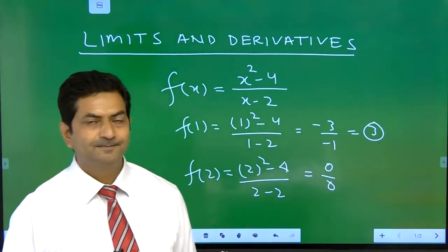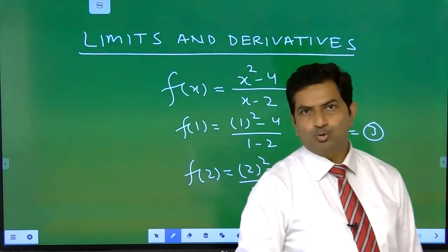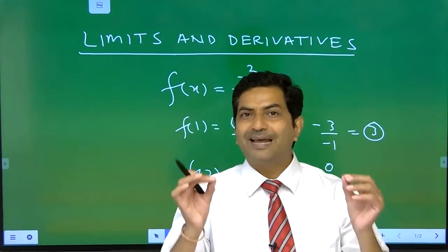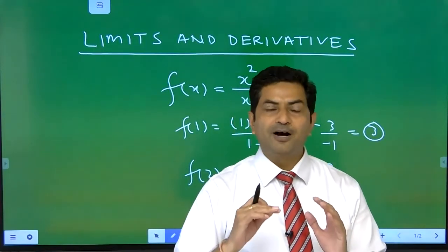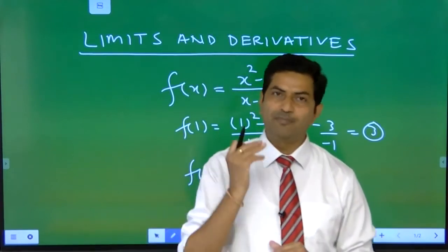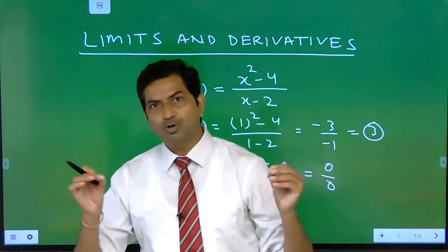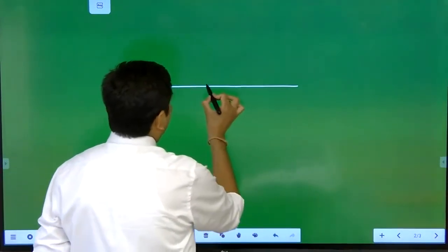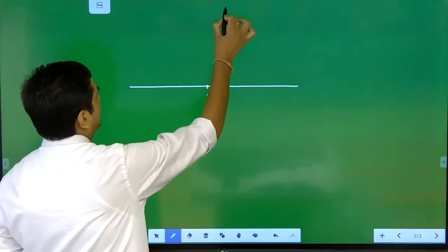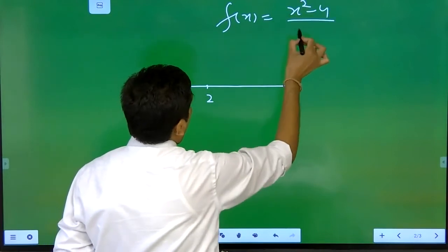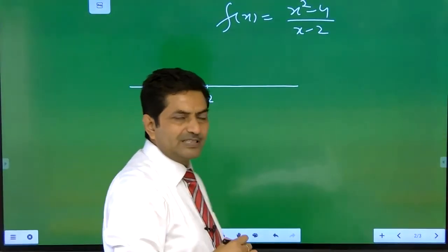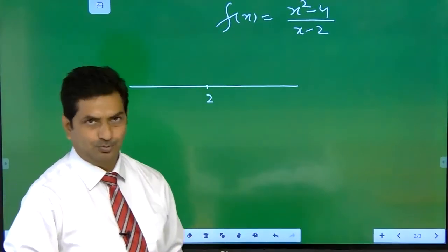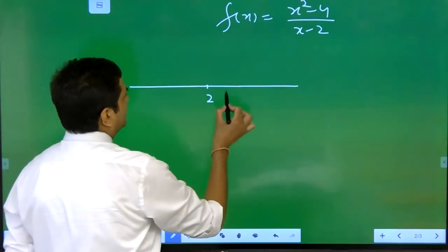The value of the function at x = 2 is not known to us. So when x is close to 2, the function is close to which value? That is the value of the function when x is close to 2. You can be at the right-hand side of 2 and also at the left-hand side of 2. Let us consider x close to 2 at the right-hand side.